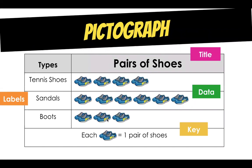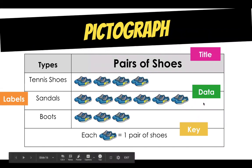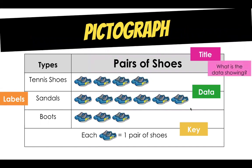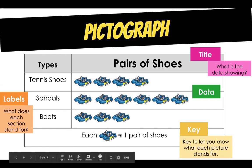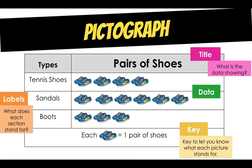All pictographs have a title, labels, key, and data. The title tells us what the data is showing — in this case, pairs of shoes that I have. The labels tell us what each section stands for: this row stands for tennis shoes, this row for sandals, and this row for boots. The key tells you what each picture stands for — one picture equals one pair of shoes. And the data shows the information: because my tally marks showed three boots, I put three pictures of shoes, same with sandals and tennis shoes.